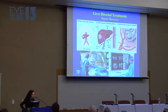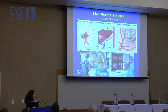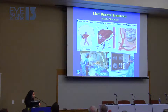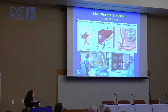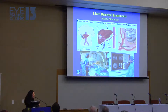This is just an image of our angiosuite here — our typical procedure room. We do everything under image guidance, under x-ray, and we can see the patient's images on a monitor right in front of us. We access the common femoral artery in the right groin area, and put a catheter all the way up into the hepatic artery. You can see that the tumor is being supplied by the hepatic artery, and we inject our therapeutic agents and embolize the tumor.